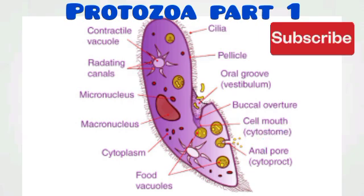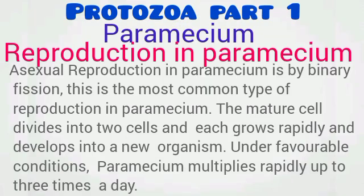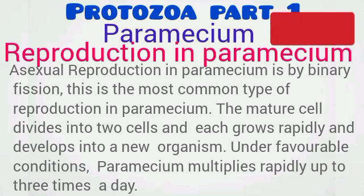Locomotion in Paramecium is simply achieved with the use of cilia, which beat in a coordinated manner. Reproduction: Paramecium carries out asexual reproduction through binary fission, which is the most common type of reproduction. However, sexual reproduction also occurs through conjugation.